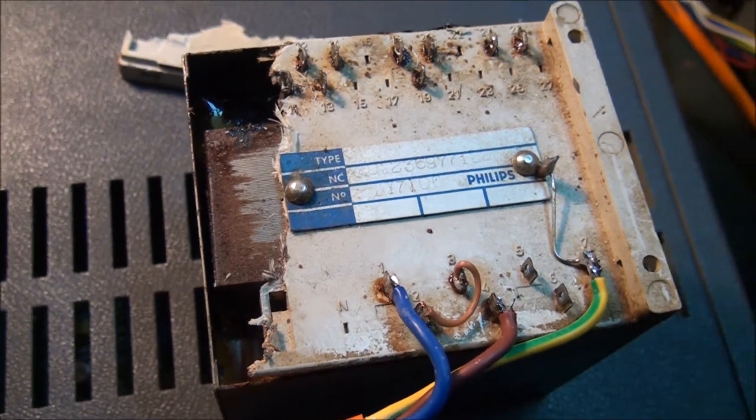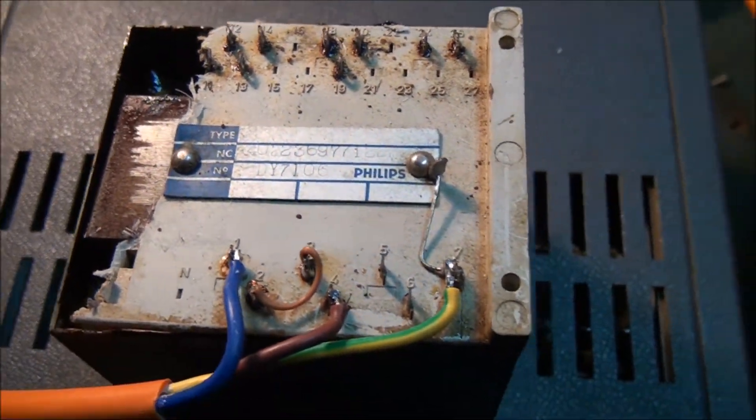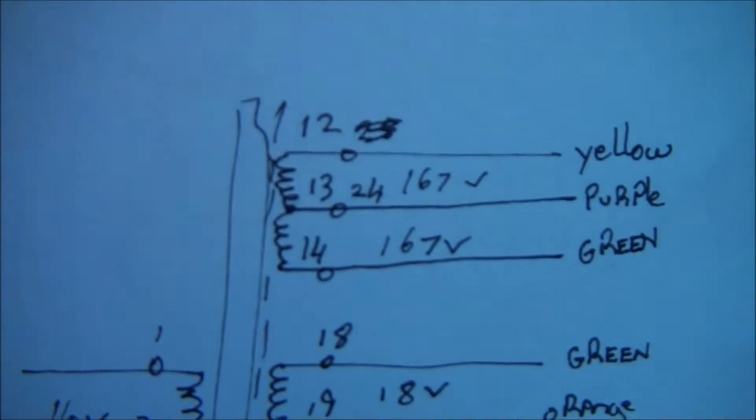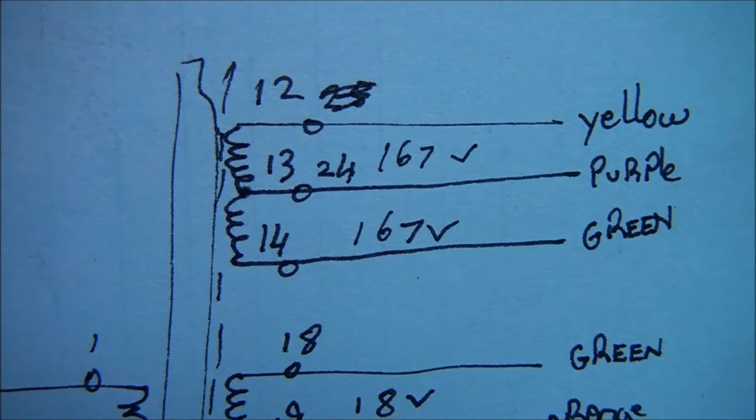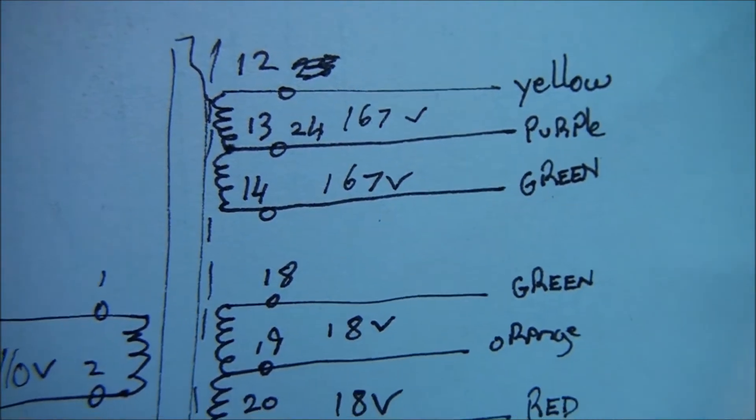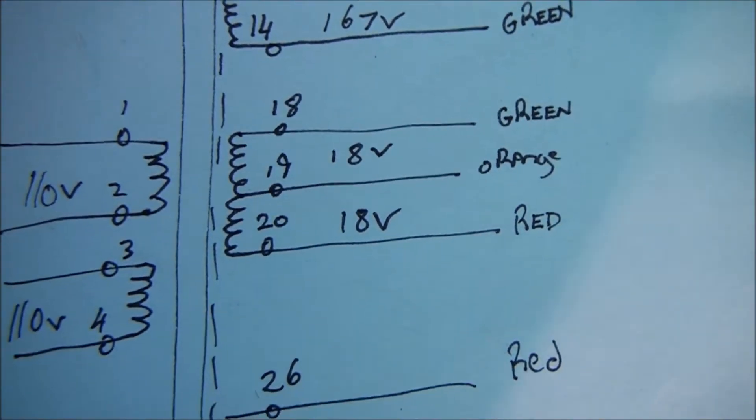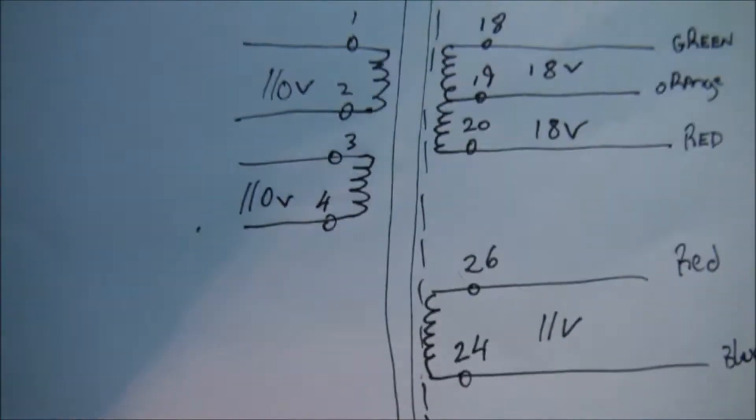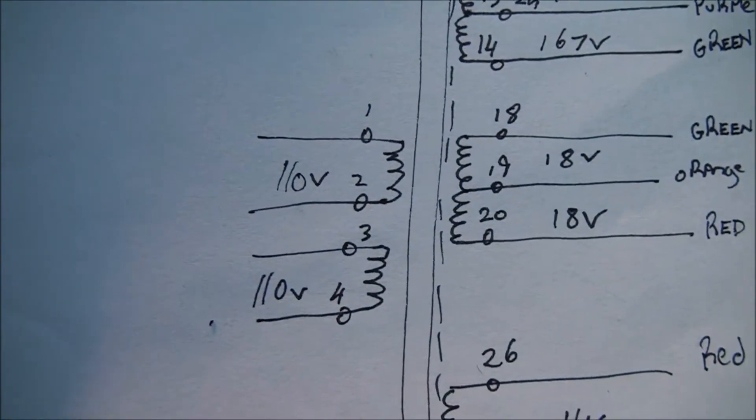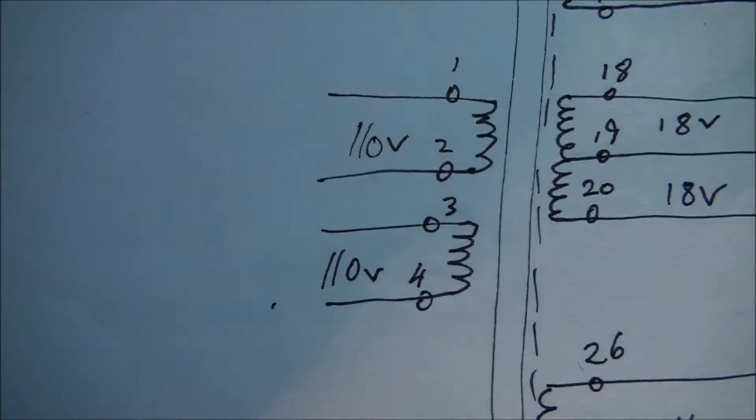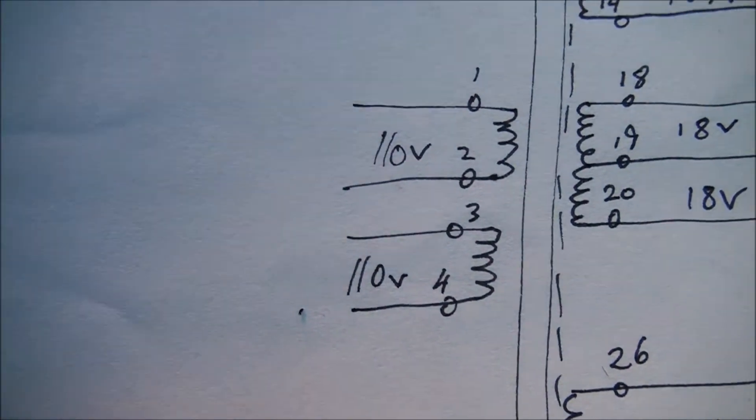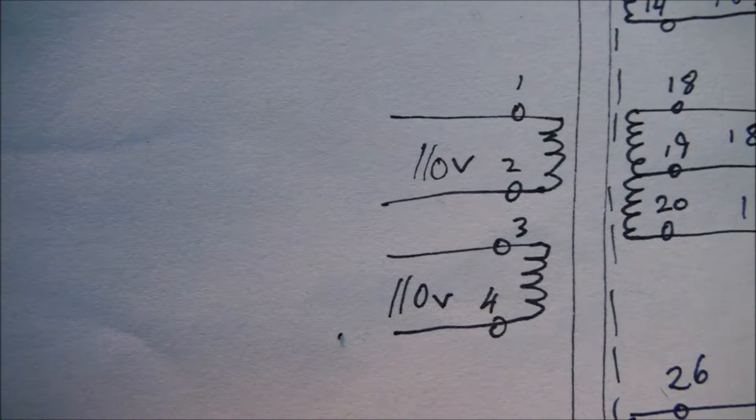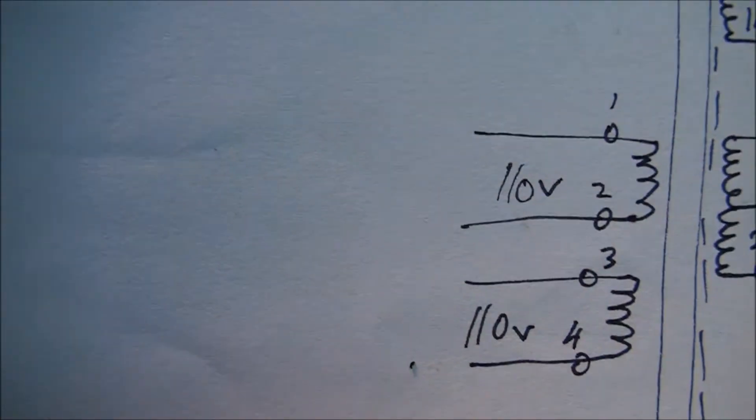Basically I drew a quick schematic of this transformer to work it out. From the secondaries: 167-167 volt center tap, 18-18 volt center tap, 11 volt output, and 210 volt primaries wired in series to suit Australian mains voltage which is around 240 volts.